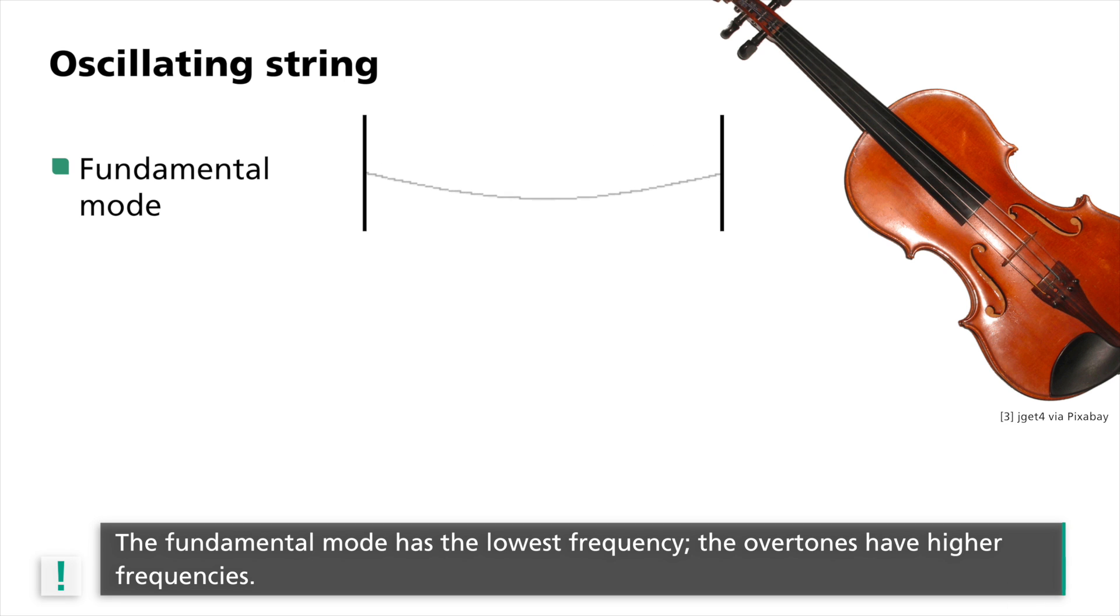In addition, there are also additional modes, which can be seen here. They are characterized by a higher number of wave nodes and troughs. Due to this, they have a higher frequency and generate a higher tone. They are called overtones.